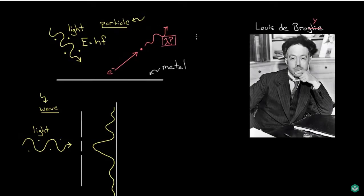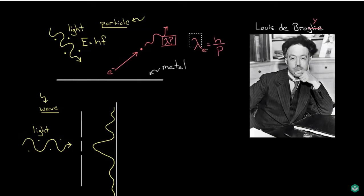He set out to figure out what this wavelength would be, and he figured it out. It's called the de Broglie wavelength. He postulated — and didn't really prove — that the wavelength associated with things we thought were matter, sometimes called matter waves, is equal to Planck's constant divided by the momentum of that electron.